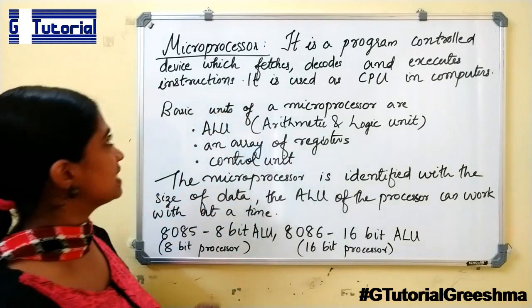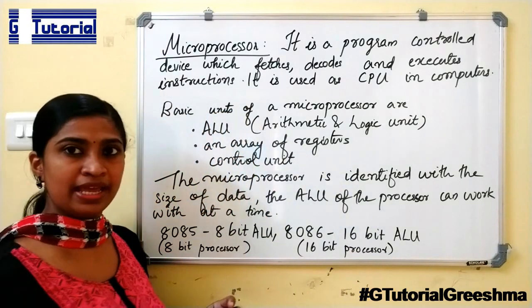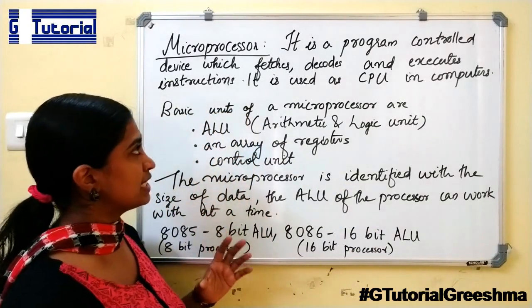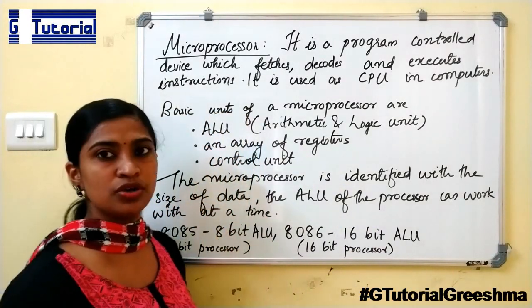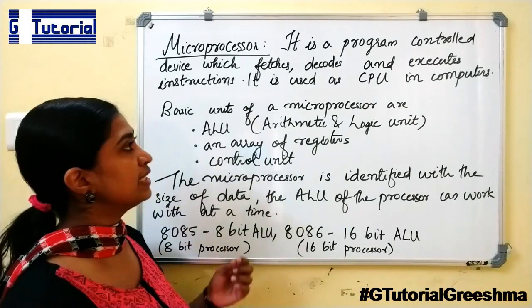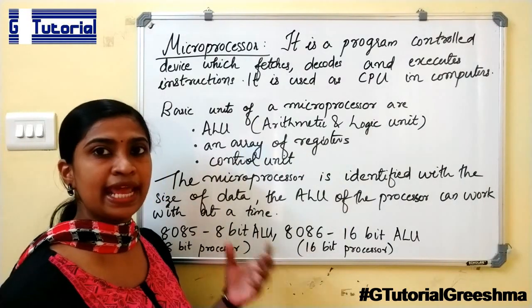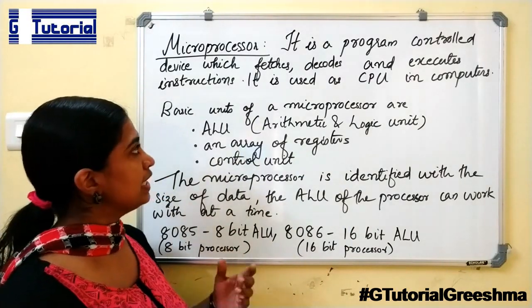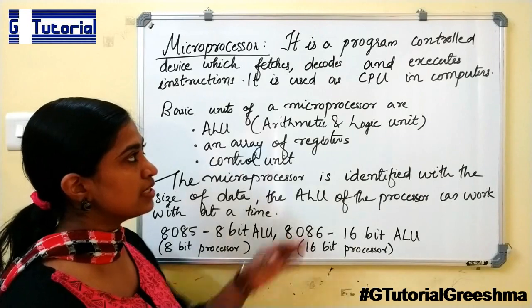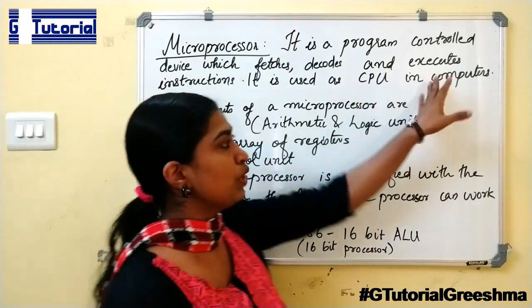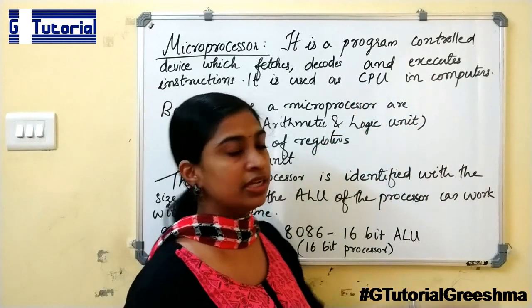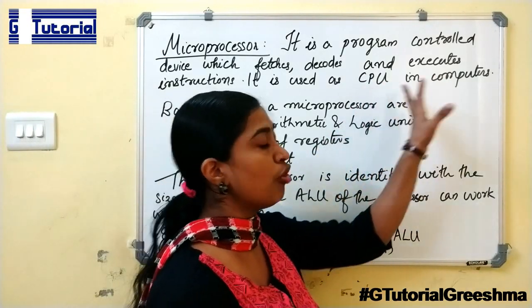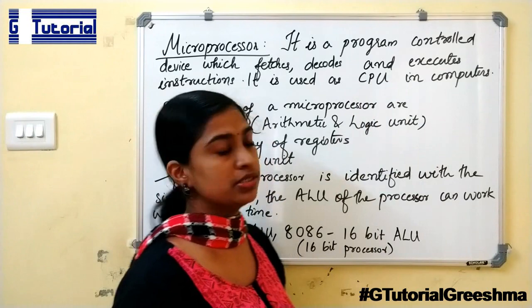First let us see what is meant by a microprocessor. It is a program control device which fetches, decodes and executes instructions. It is mainly used as CPU — the central processing unit — of computers.